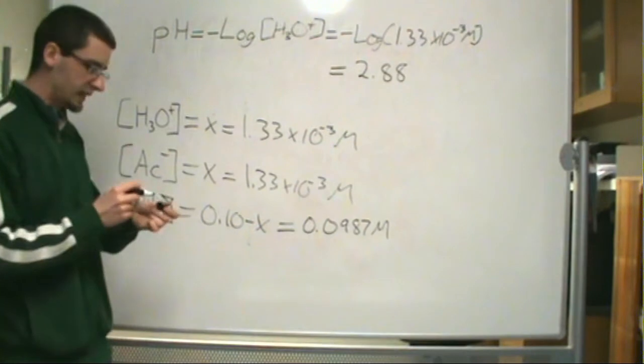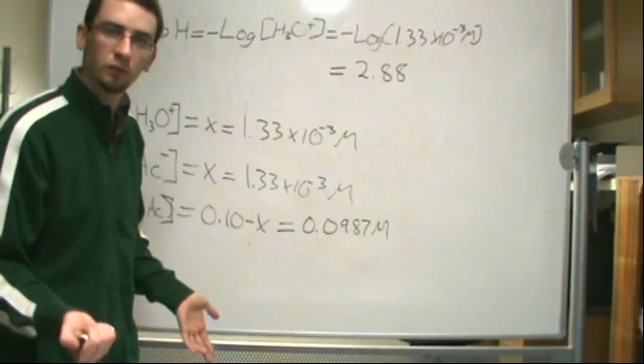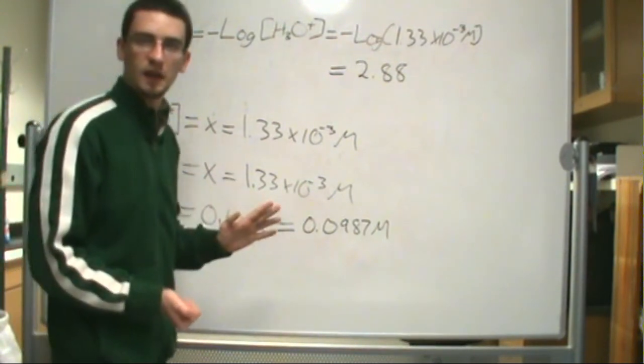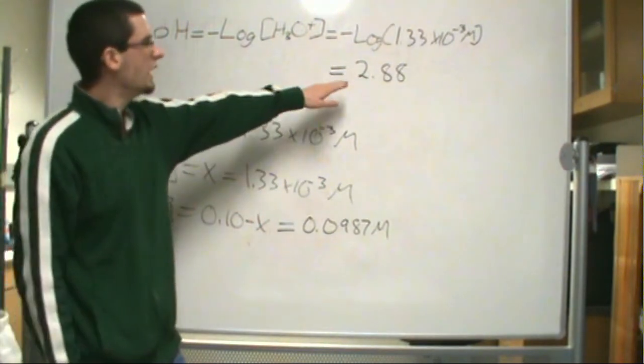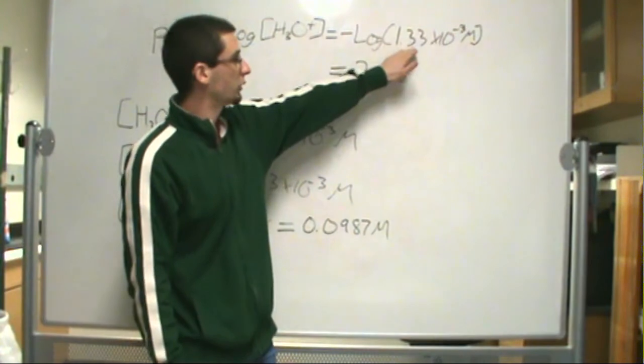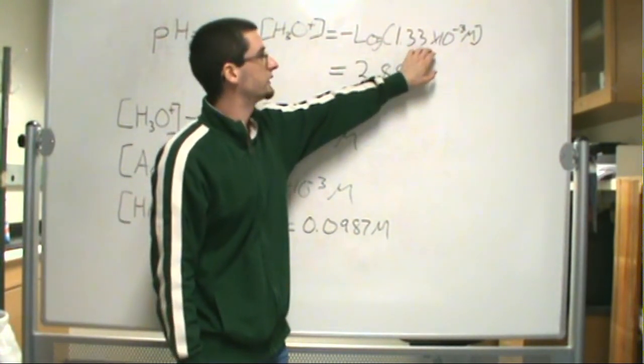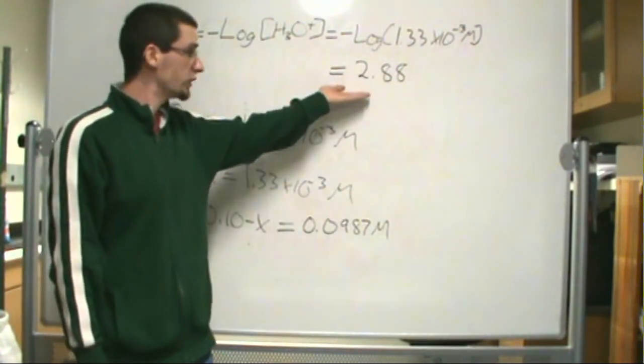Now the question is, does this make sense? Well, yes it does. We're looking at a weak acid. So we should have a pH that is less than 7 because it's an acidic solution. And if we look at the concentration of our hydronium ion, if we take the negative log of something that's close to 10 to the negative 3, we should get something around 3, in which case we do.